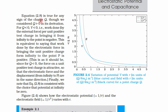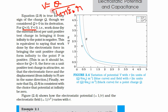Equation 2.8 is true for any sign of charge q, whether positive or negative. For q less than zero, the potential would simply be negative, because v is equal to q upon 4 pi epsilon naught r. So if charge is negative, potential will also be negative — that is, work done by external force per unit positive test charge in bringing it from infinity to the point is negative.